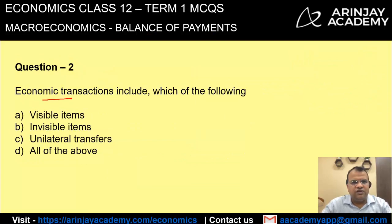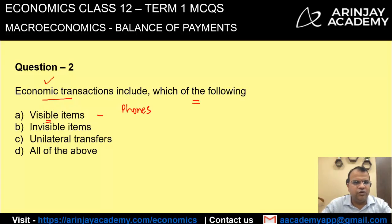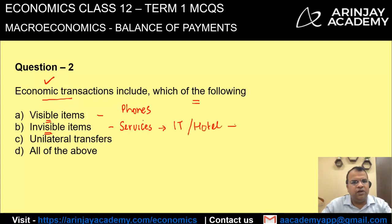Economic transactions include which of the following? Visible items — yes, of course. A visible item could be something like phones; you can see them, you can touch them. So transactions for purchase and sale of phones are obviously economic transactions. Invisible items would be transactions for services — IT companies, hotels — you pay for them, and all these form part of economic transactions.